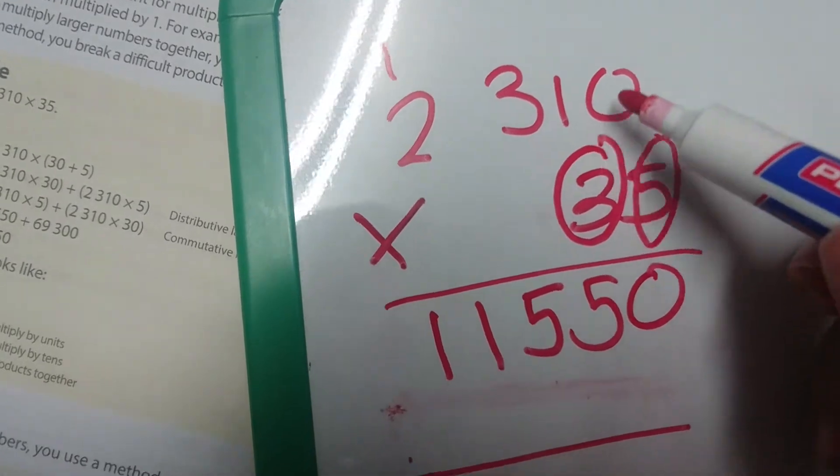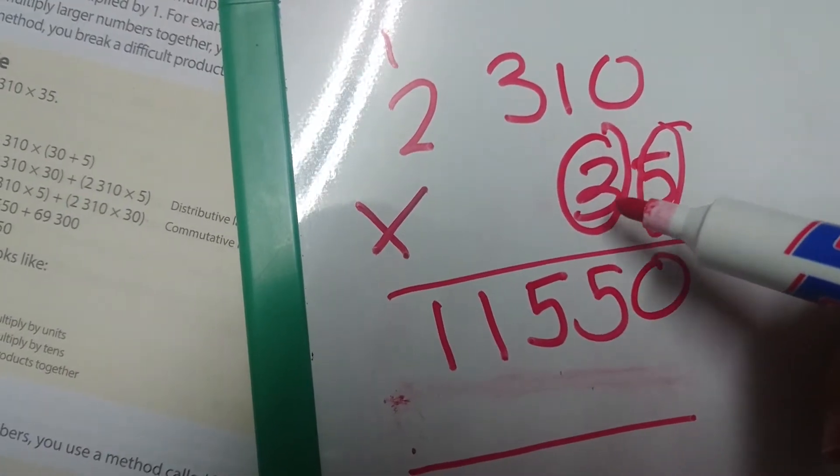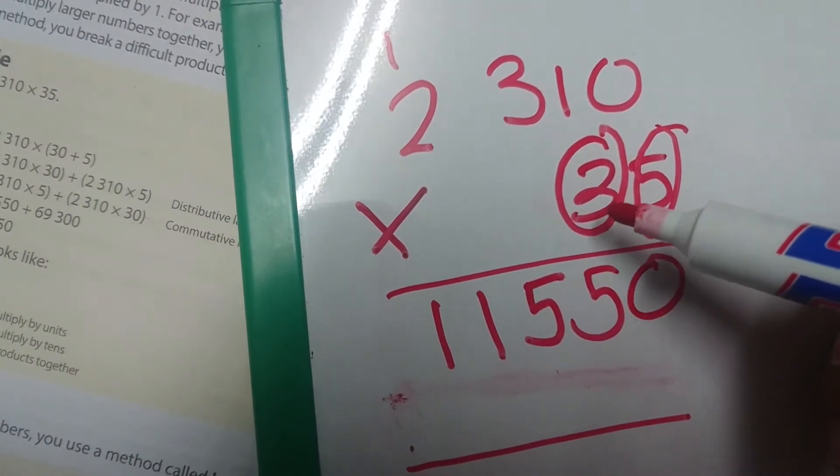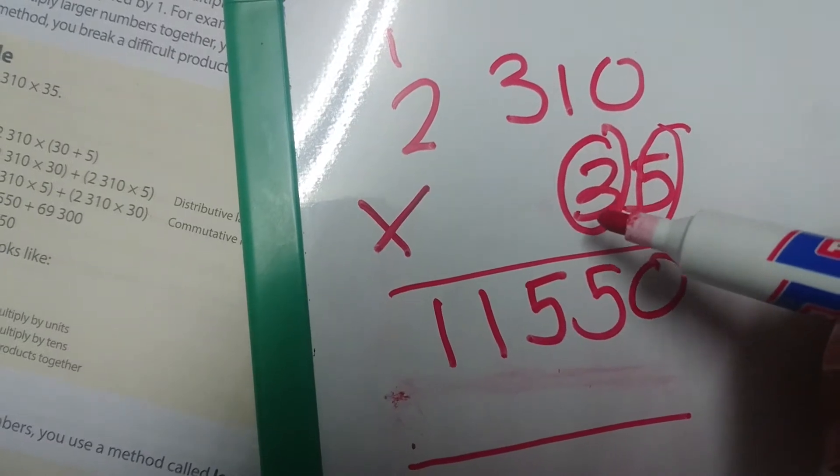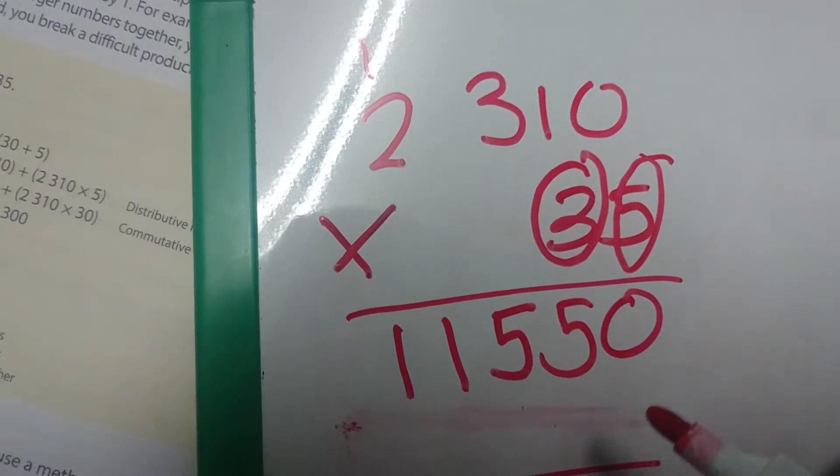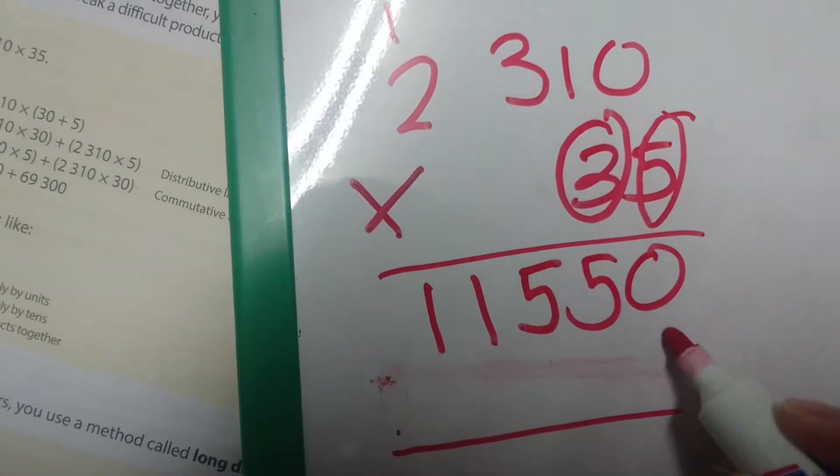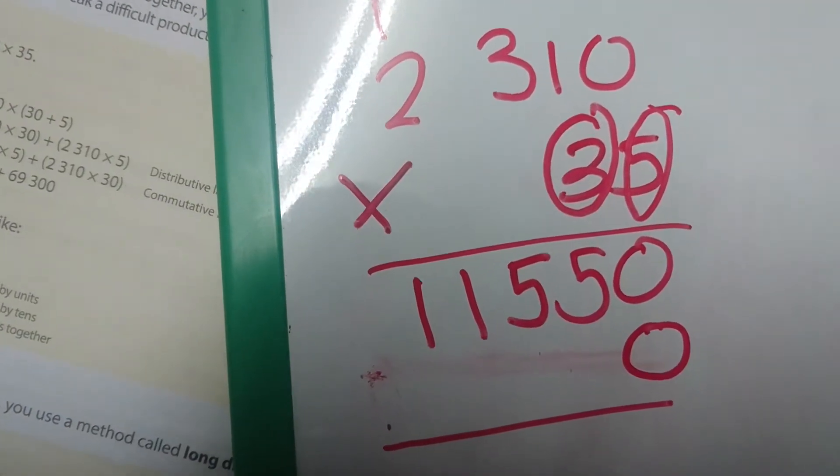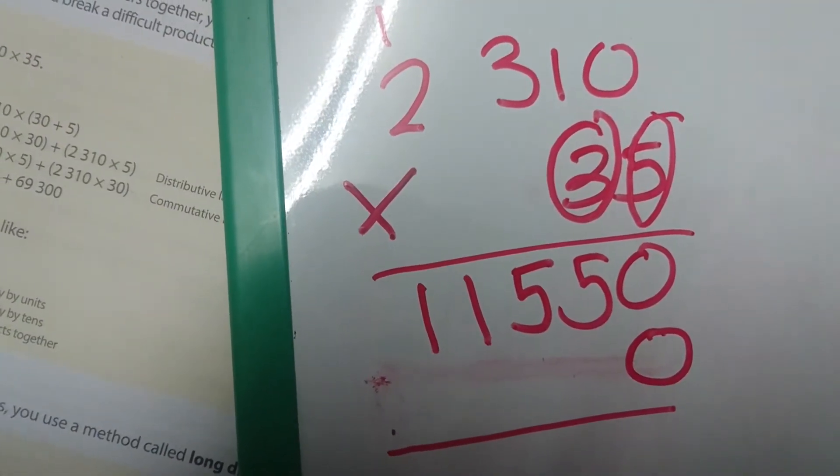Now we are going to multiply the top number by the 10s. As you can see, this is 30, it's in our 10s position. Because it's in the 10s, we are going to put down our 0, then we start with our calculation.